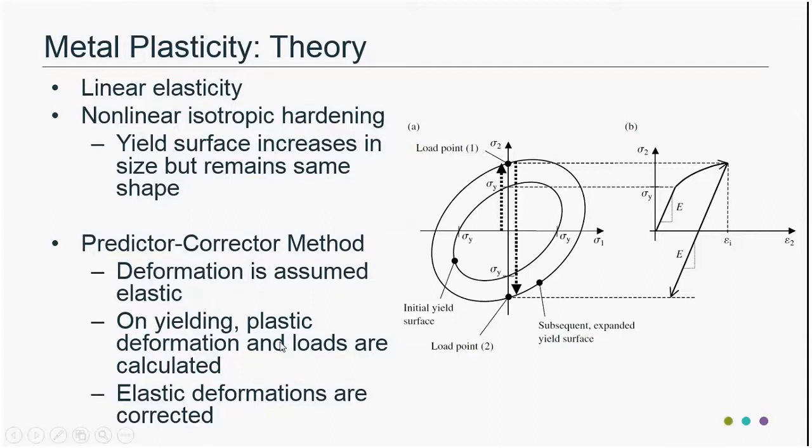In terms of how we solve for that in FlexCom, we use a Predictor-Corrector method. On our initial solution — the first pass — we assume all deformations are elastic. After yielding, we extract the plastic deformations and then correct for the elastic deformations. This happens iteratively as the solution progresses.